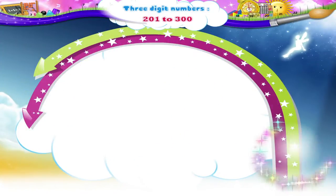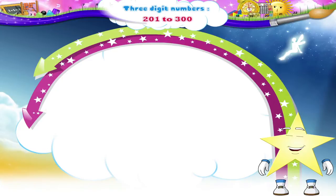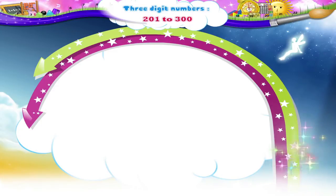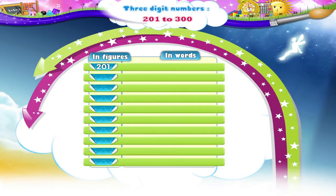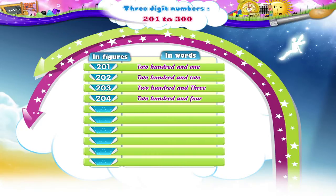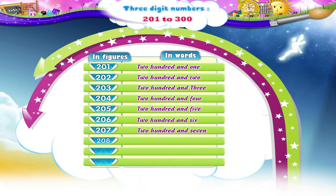OK, now Starry, let us read all the numbers from 201 to 300 in a sequence. You have to repeat with me. 201, 202, 203, 204, 205, 206, 207, 208, 209.